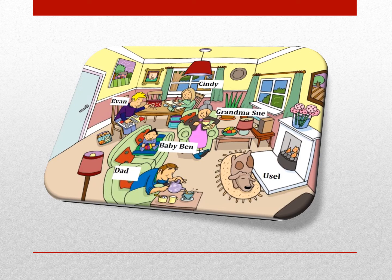ببینید شما افراد مختلفی رو توی اتاق میبینید که همین الان هر کدوم در حال انجام یک کاری هستند. مثلا سیندی همین الان داره مشقش رو مینویسه. ایوان داره تمبر رو توی آلبوم میچسبونه. گراند ماسو داره چایی میخوره. یوسل سگشون کنار شومین خوابیده. بیبی بن داره با توپش بازی میکنه و دد داره چایی میریزه. تمام این فعالیت ها همین الان داره اتفاق میفته.